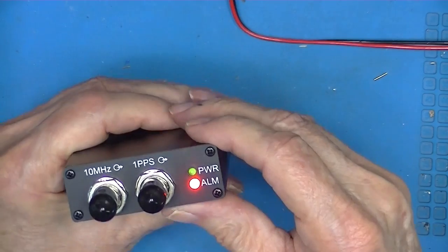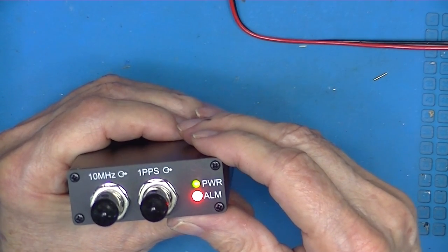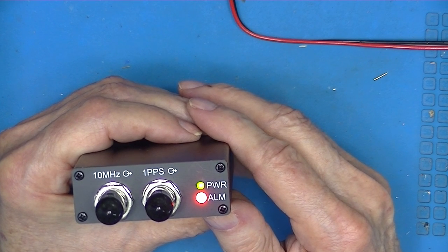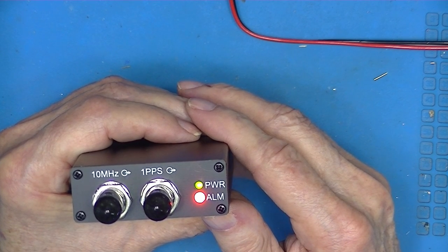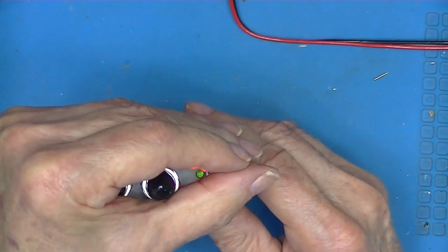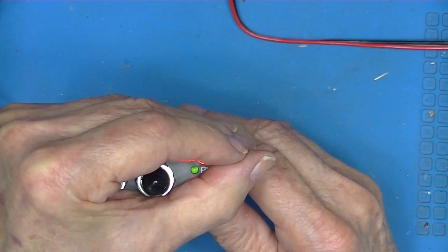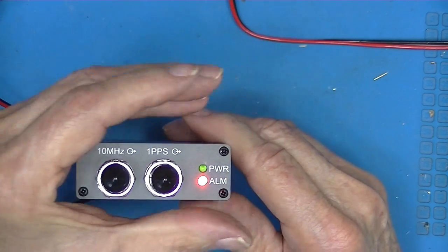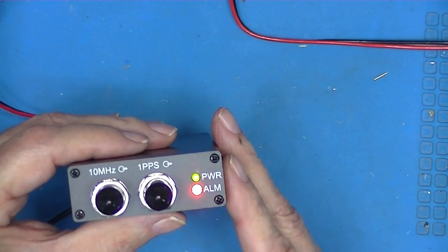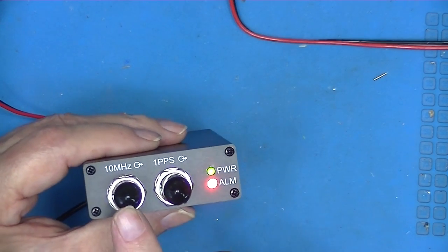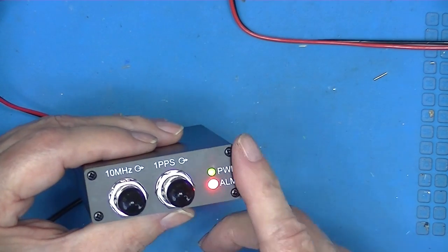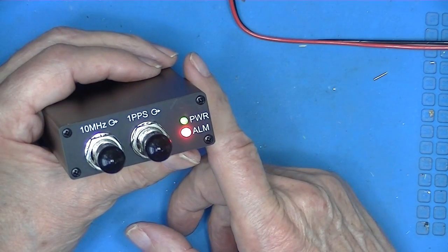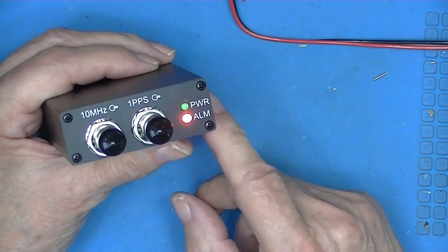You can see the power LED is flashing. Maybe you can't see that. And the alarm is on, which means that the output of this thing wasn't either on or calibrated. So it's 6:26 in the evening here. Let's see how this goes.